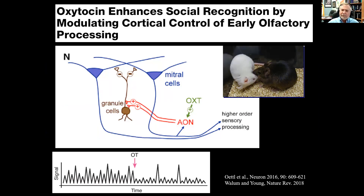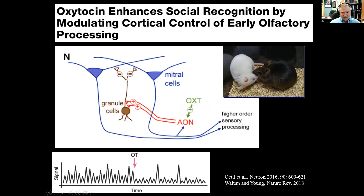Mice tell each other apart by smell — they sniff each other and can recognize the odor that makes each mouse unique. But if they don't have oxytocin, they can't do that. A paper by Wolfgang Kelsey's group illustrates how that works: when mice interact, oxytocin is released into the anterior olfactory nucleus, which increases the excitability of those neurons onto granule cells, which are inhibitory. That basically silences the noise. There's a lot of noise in the olfactory bulb, but when oxytocin comes by, the noise goes down and the real signal comes through.